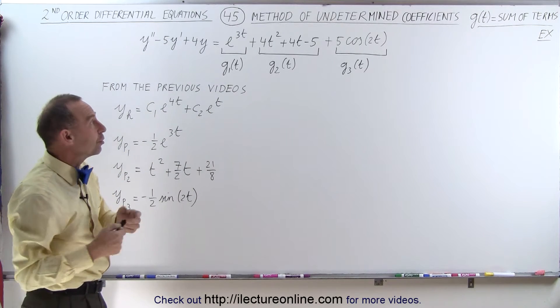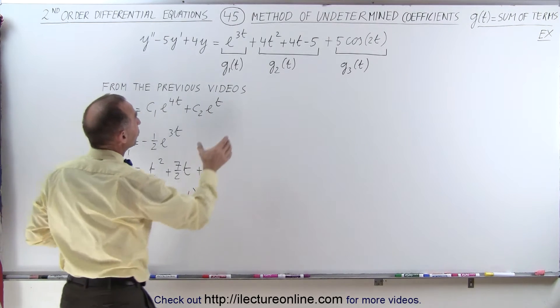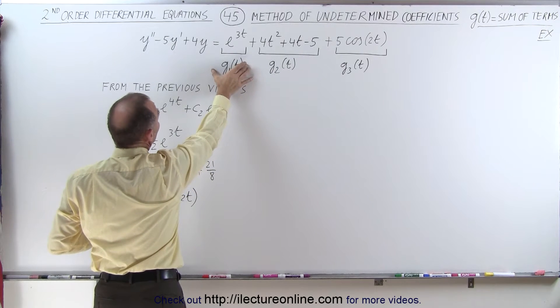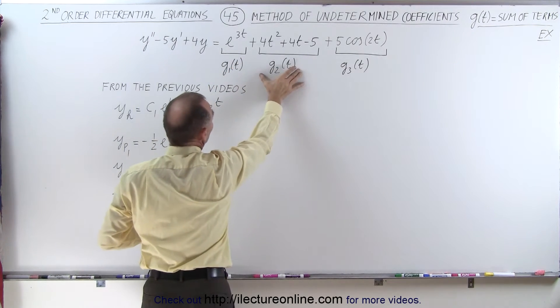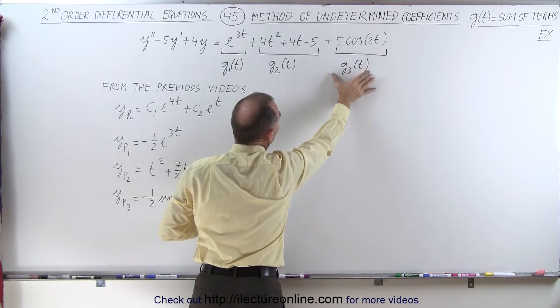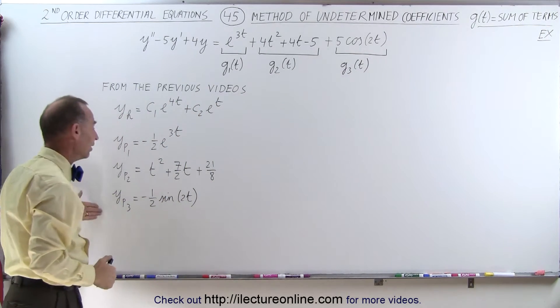Then using the method of undetermined coefficients, we were able to find the particular solution for G1, the particular solution for G2, and the particular solution for G3. And here they are.